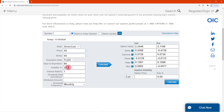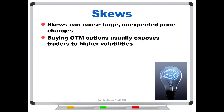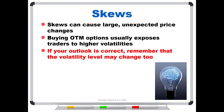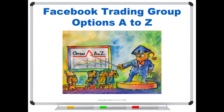That's because you weren't accounting for the shift in implied volatilities based on the skew curve. Just remember that skews can cause large, unexpected price changes. Buying out-of-the-money options usually exposes traders to higher volatilities, and if your outlook is correct, remember that the volatility level may change too. For anyone who'd like to learn more about the art and science of options trading, please check out the AlphaTrader course and Strategy Lab at optionsAtoZ.com, and please join us on the Facebook trading group Options A to Z.